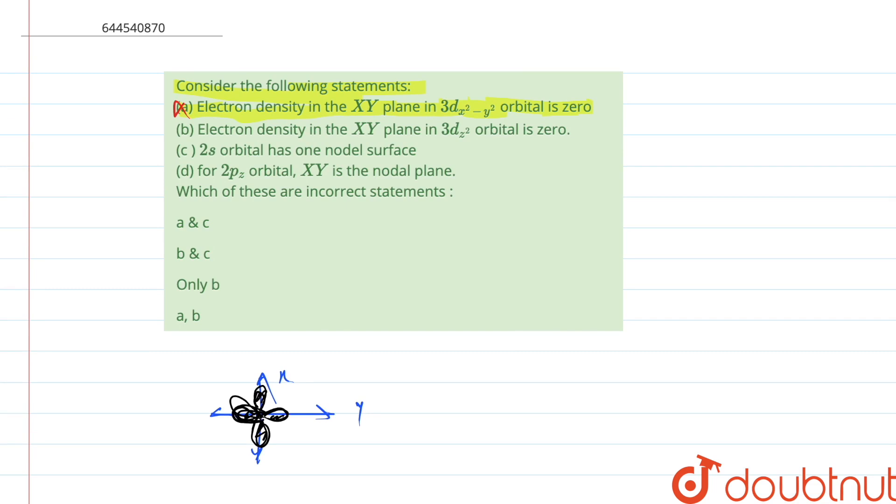Then comes part b that states that electron density in xy plane in dz square orbital is zero. This is also incorrect and if we try to look into this one as well. If this is z, this is x if we assume.